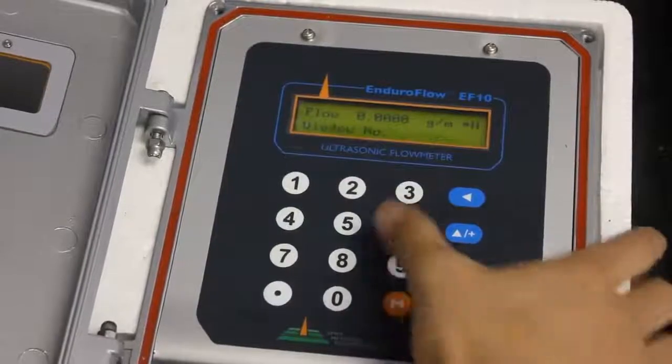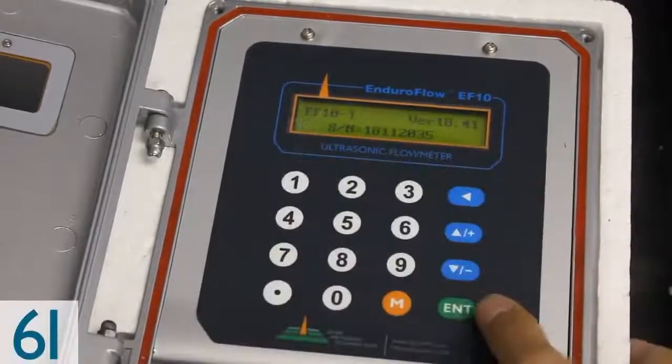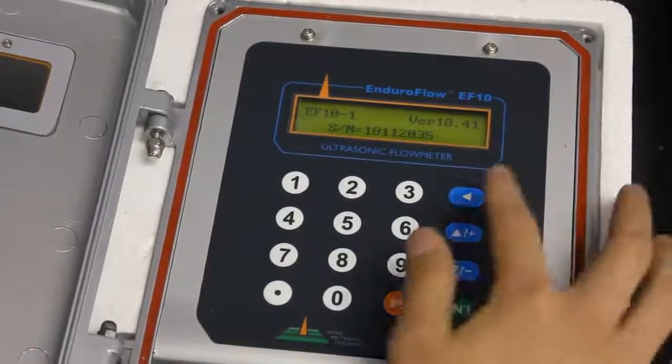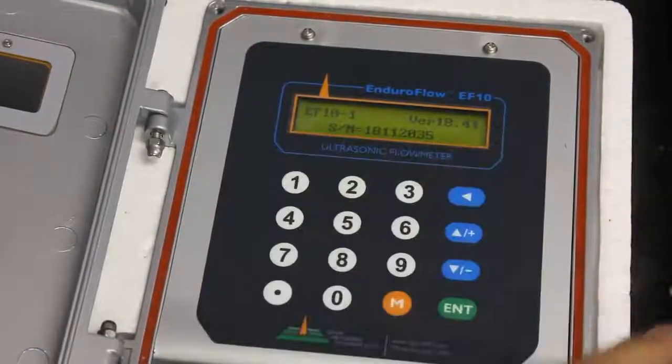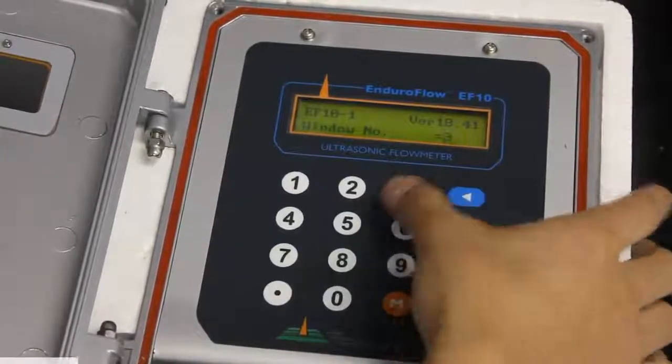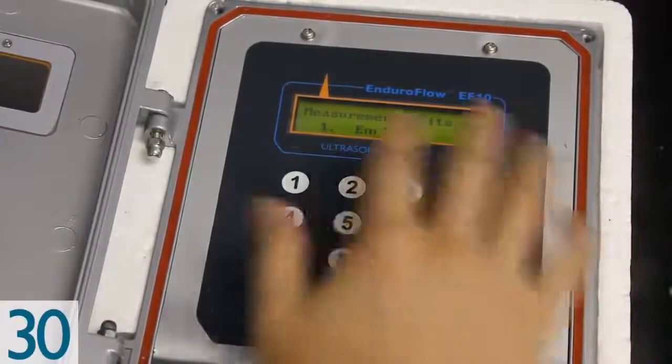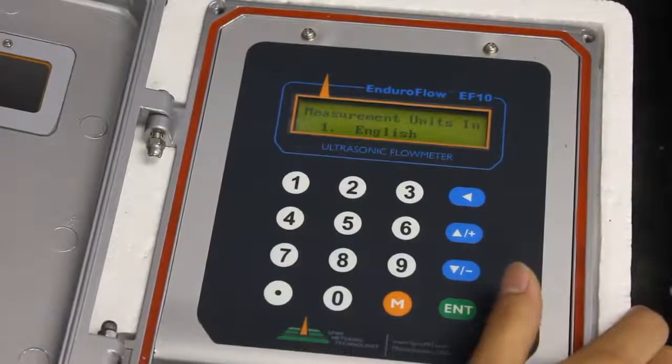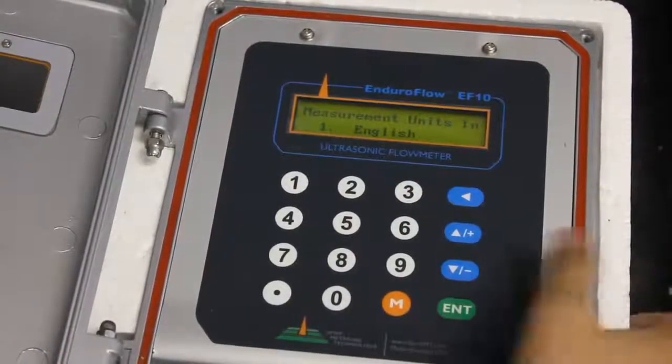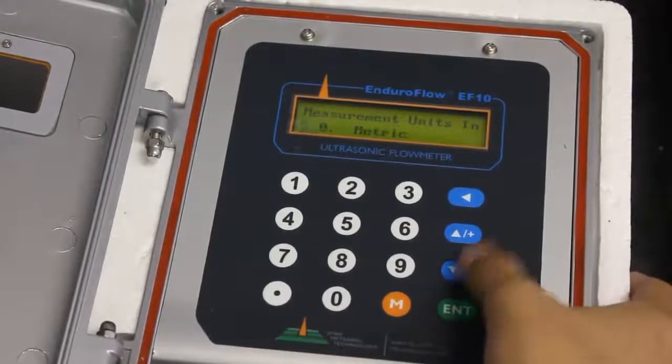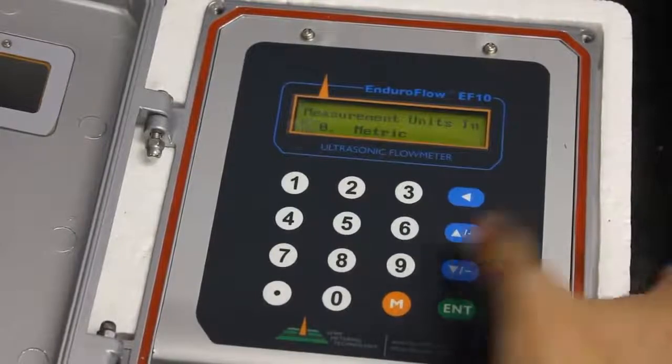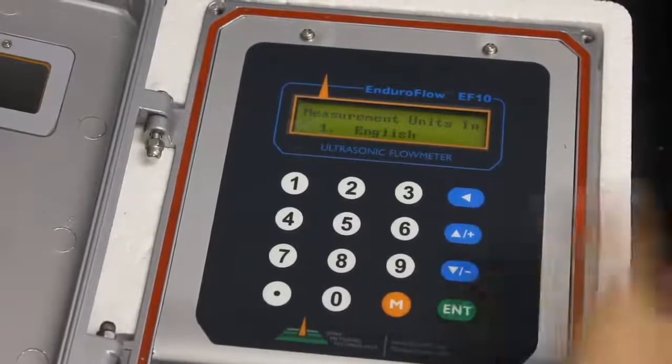First we need to go to menu 61 to check and make sure we have the correct version, the correct serial number, and the correct model, the EF-10. Next we go to menu 30 to set the measurement unit. It's already in English which is the factory standard, but if you wanted to change that you would just press enter and scroll down or up to change between English and metric.